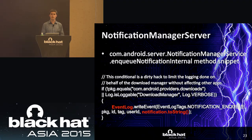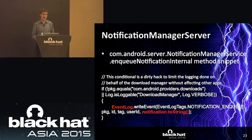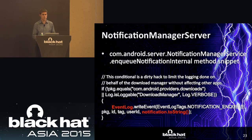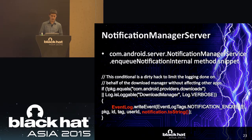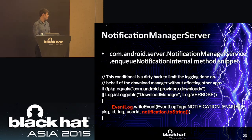There's the notification manager service, which runs in the system server process. When you interact with the notification manager using the front-end API, you're calling an interface that interacts with the notification manager server in the system server process — com.android.server.NotificationManagerService. I looked at the source code for the enqueueNotificationInternal method. It essentially says: whenever a notification is received, if it isn't from the download manager, get the toString() of the notification along with a few other data items, and write it to the event log under the notification_NQ log tag.